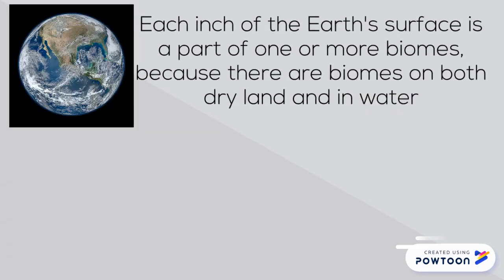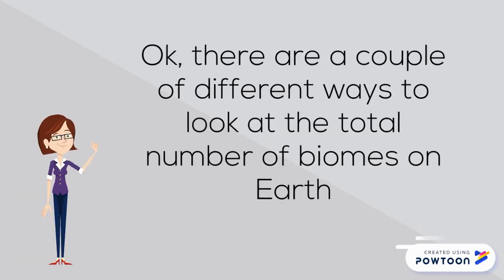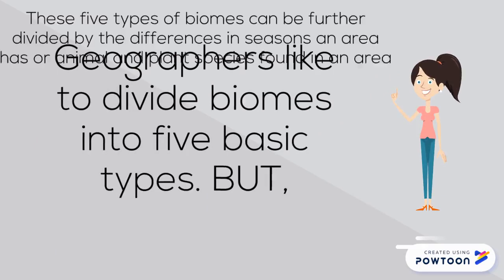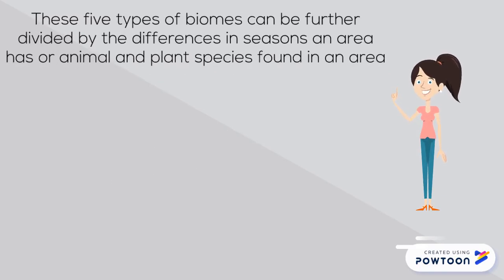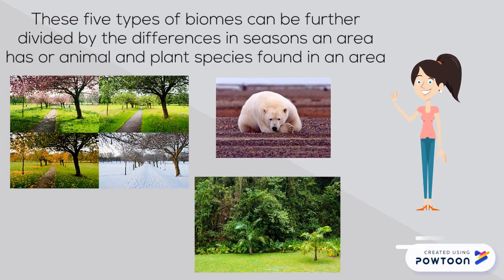Each inch of the Earth's surface is part of one or more biomes, because there are biomes on both dry land and in water. There are a couple of different ways to look at the total number of biomes on Earth. Geographers like to divide biomes into five basic types, but these five types can be further divided by the differences in seasons an area has or animal and plant species found in an area.